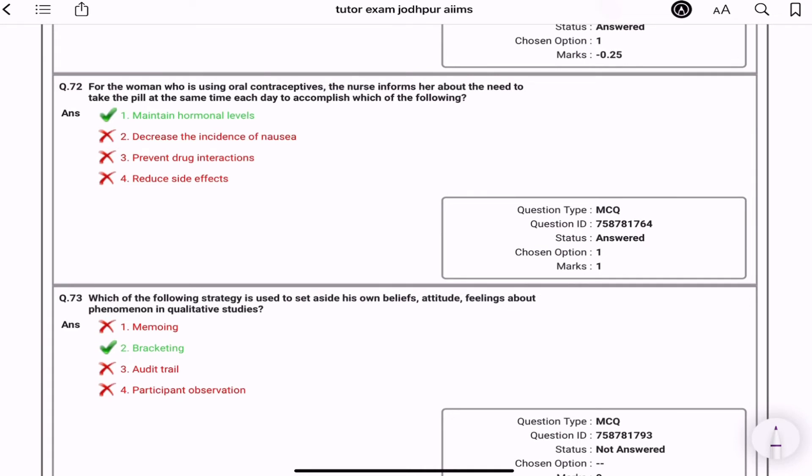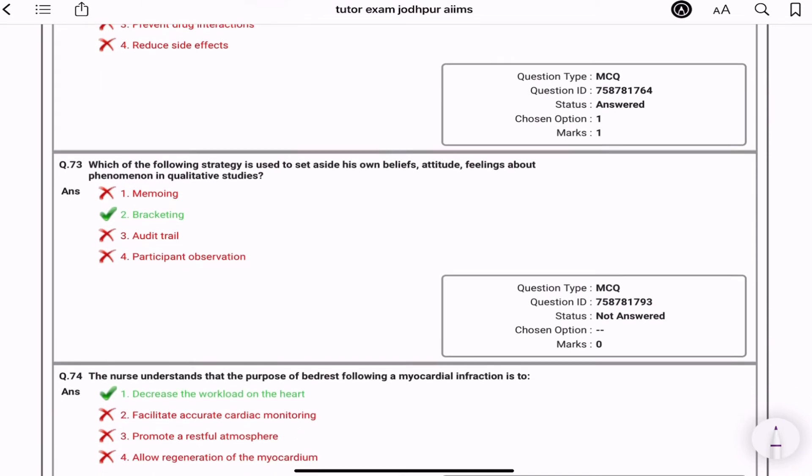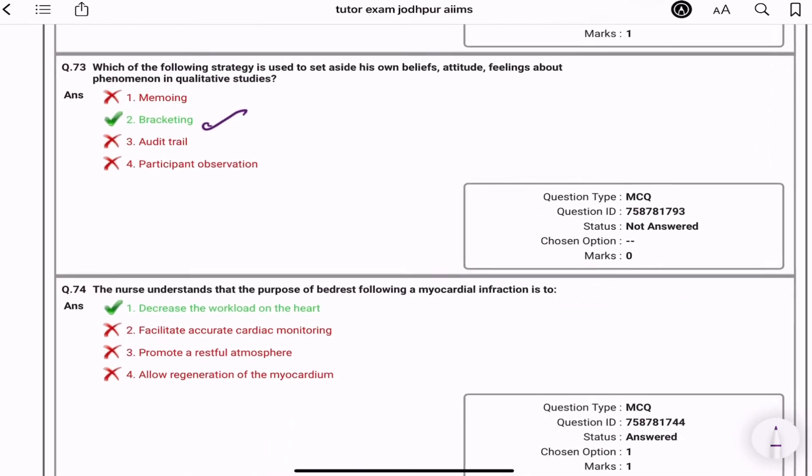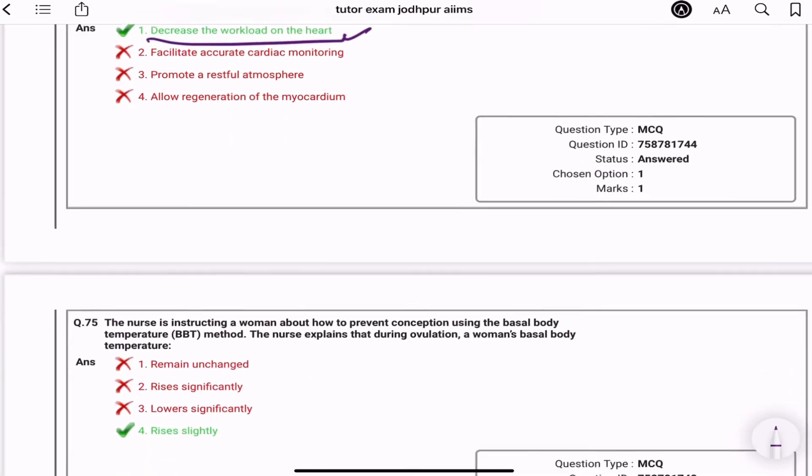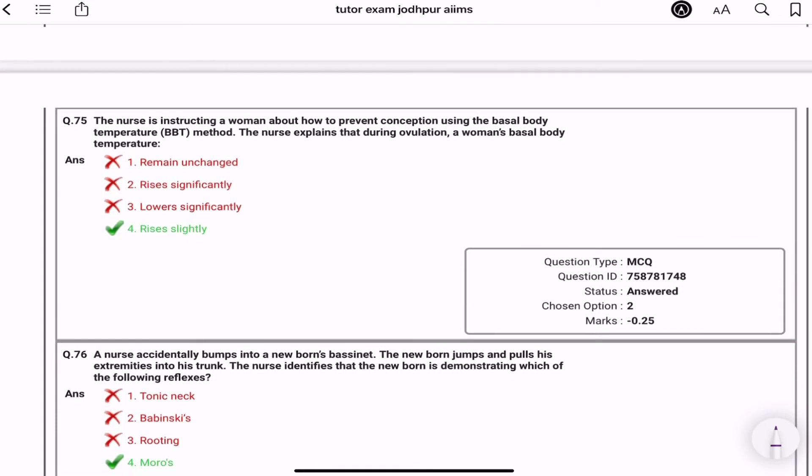Inform her about need to take pill at the same time each day to accomplish which of the following? Maintain hormonal levels. Oral contraceptive, the nurse inform her about to take at the same day. Kyun lena hai usko same day ta ki hormonal level maintains rehna aapki. Which of the following strategy is to use to set aside his own belief, attitude, feelings about the phenomena in qualitative studies? Bracketing. The nurse understands the purpose of the bed rest following MI is to decrease the workload on the heart. The nurse is instructing a woman about how to prevent conception using a basal body temperature method. During ovulation, women's body temperature rises significantly.